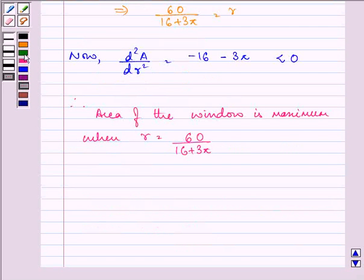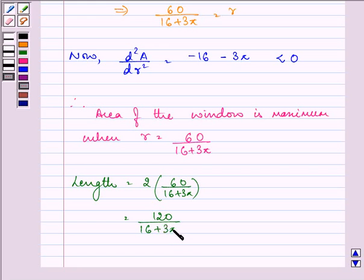Let us find out the length also then. The length of the rectangle is equal to 2 into r. So, this gives us, 120 upon 16 plus 3 pi.